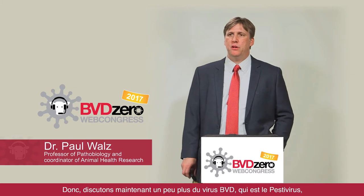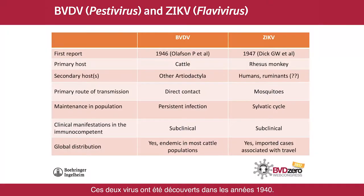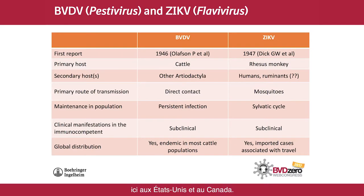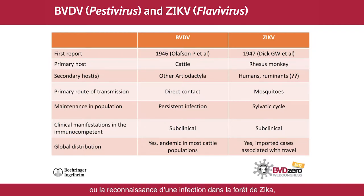Now let's get into more discussion of BVD virus, which is the Pestivirus, and Zika virus, which is the Flavivirus. Both of these viruses were discovered in the 1940s. Olafson in 1946, as well as Childs in 1946, both described BVD virus simultaneously in the United States and in Canada. The Zika virus was first reported in the early 1950s, based upon an infection that occurred in 1947 in the Zika forest. That's how the virus got its name — the Zika forest is located in Central Africa, near Uganda.